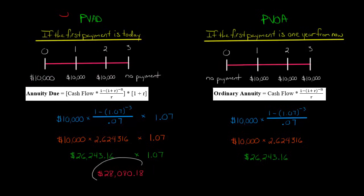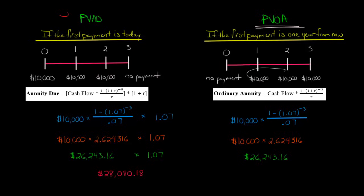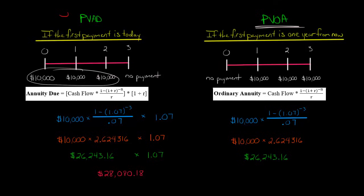You probably noticed the annuity due is higher — why is that? In this case we're talking about a liability, because we're agreeing to make lease payments. With the annuity due, the first payment occurs today, so it isn't discounted at all — its present value is simply $10,000. With the ordinary annuity, payments are pushed further into the future, so they get discounted more. Because the payments occur earlier in the annuity due, the present value of the liability is higher.